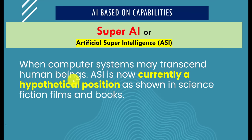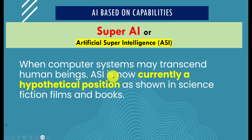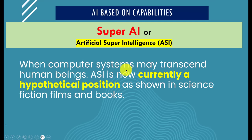The third type based on capabilities is Super AI — or Artificial Super Intelligence (ASI). This is currently a hypothetical position — what you see in science fiction films and books. This is when the computer is able to transcend human beings in terms of intelligence. That completes the capabilities-based classification.